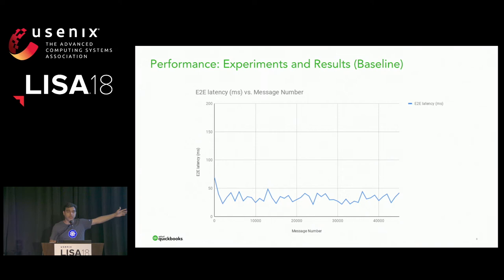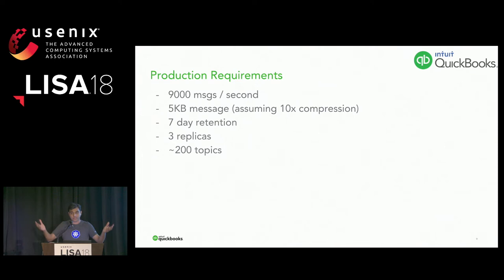So we were getting an average E2E latency of about 35 milliseconds, which was good. But we wanted to earn our living — we didn't want to just take a public repo, run it, and say we're done. So we said, let's see if we can do better.